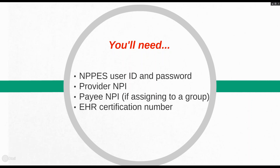To access the system, you'll need to have your NPPES username and password, the attesting provider's NPI and Social Security number, and if the payment is being assigned to a group, be sure to have the payee NPI and last four digits of the EIN. You'll also need a valid EHR certification number — it's not required on CMS's website, but it is a requirement for North Carolina.